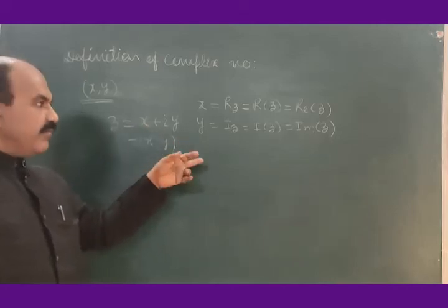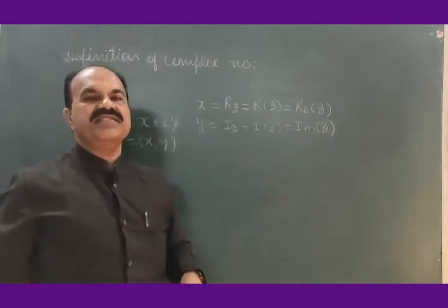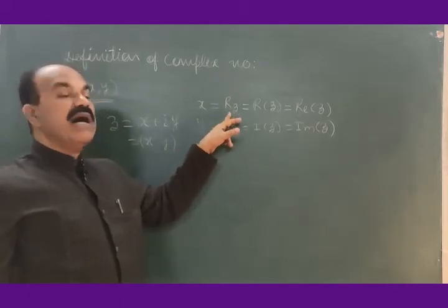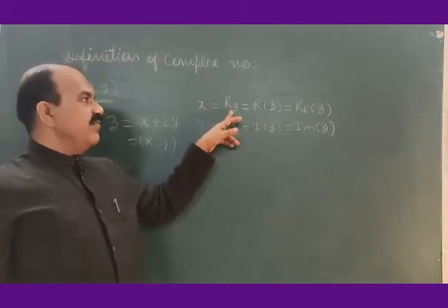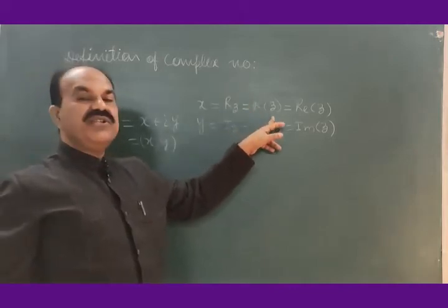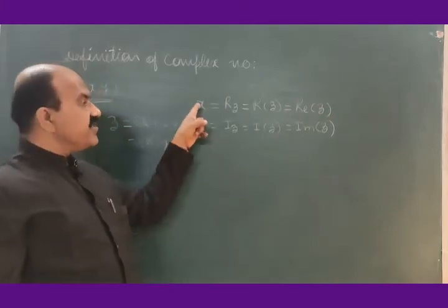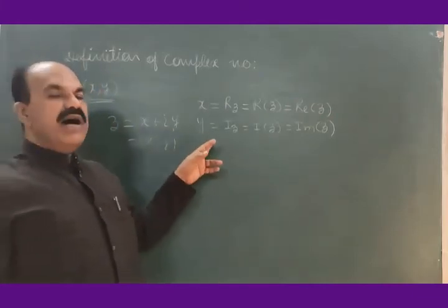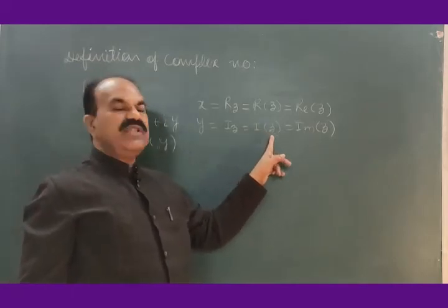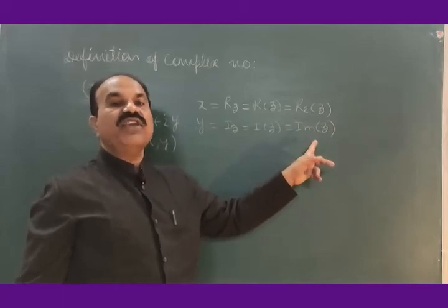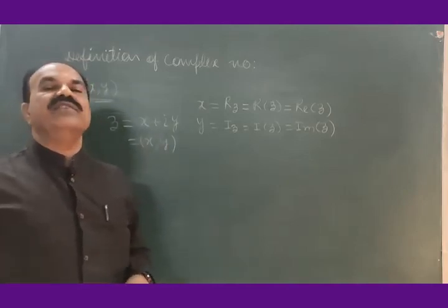The real part x of a complex number can be represented as Rz, where R stands for real and z is the complex number — meaning the real part of complex number z. Re(z) means the real part of complex number z. For the imaginary part y: Iz means imaginary part of complex number z, I(z) similarly, and Im(z) where Im stands for imaginary. So y is the imaginary part of the complex number z.